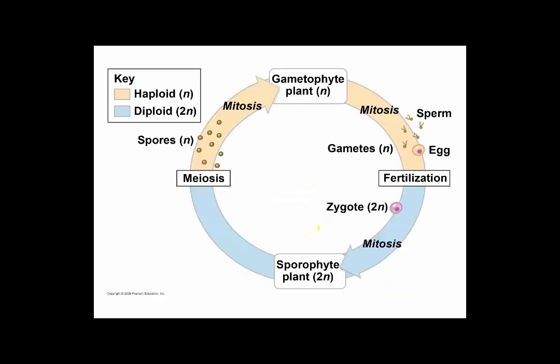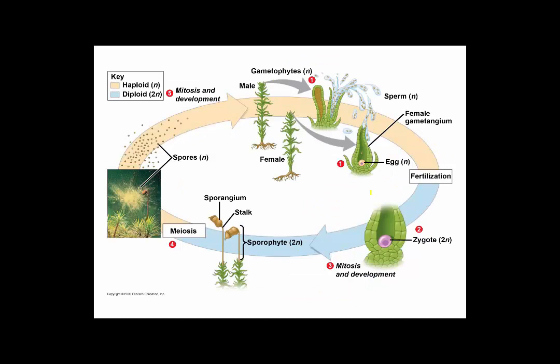Here's another diagram showing the same information: a sporophyte plant produces spores by meiosis, which develop by mitosis to form a gametophyte plant, which produces gametes by mitosis, which fuse together to form a diploid zygote. It's a cycle. Looking at actual plants, what are these sporophytes and gametophytes? Throughout the process of plant evolution, there's been a tendency for the gametophyte to become progressively smaller compared with the sporophyte.